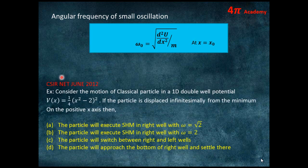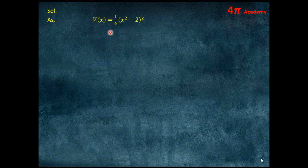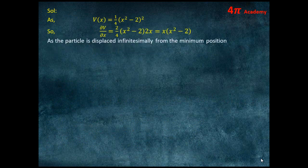Now we'll see an example from CSIR Net June 2012. Consider the motion of a classical particle in a 1D double-well potential: U = (1/4)(x² − 2)². The particle is displaced infinitesimally from its minimum position on the positive x-axis. We calculate dV/dx = x(x² − 2). Setting dV/dx = 0 gives x = 0 and x = ±√2.